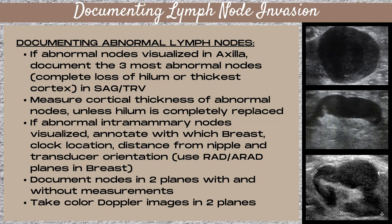Also take a color Doppler image in each plane. Ensure that you have three measurements: a length, a width, and a height — two horizontal measurements and one vertical measurement. If you come across an abnormal intramammary node while scanning, the only difference in documentation is that within the breast you use radial and anti-radial planes rather than sagittal and transverse planes as you would in the axilla.